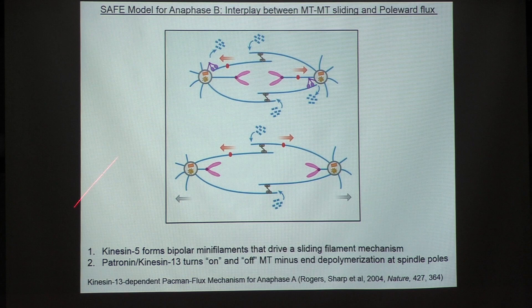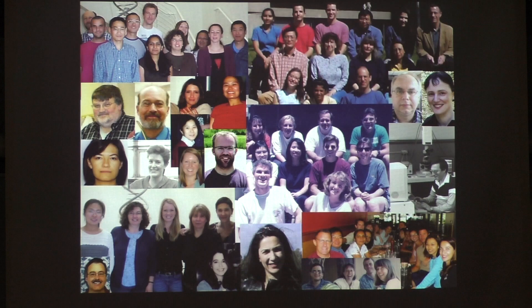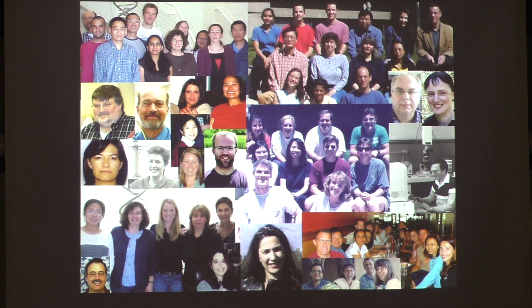This is what we've learned about motors adapted to mitosis and ciliogenesis. We've had fantastic mentors, collaborators, and colleagues in and outside the department. I want to leave you with a picture of some of the great people who've worked in the lab — post-docs, graduate students, technical and scientific staff. Not all of them are shown — I couldn't find everybody's photo — but several of them are here today, and I hope they feel proud of the work they did. Thank you.